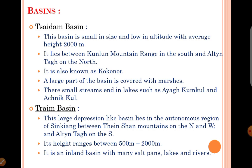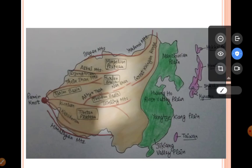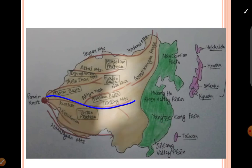The third topic is the Basins. There are three important basins: the Zaidam Basin, the Tarim Basin, and the Dzungarian Basin. The Zaidam Basin is the largest basin, with an average height of almost 2000 meters. It is placed between the Kunlun Mountain Range and the Altintagh. You can see it on the map — here is the location. It is also called Kokonor. It is a covered basin with marshes, muddy land, small streams, and lakes. Ayak Kumkul and Achnikul are two important streams.